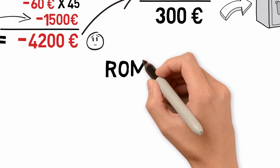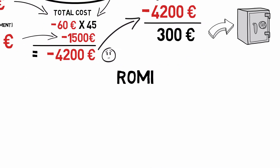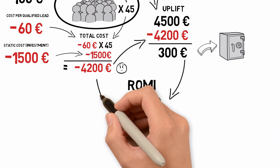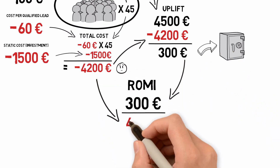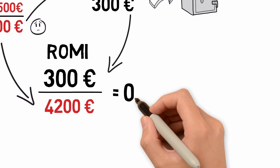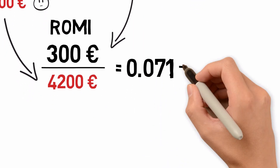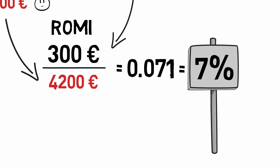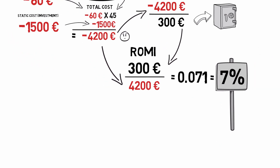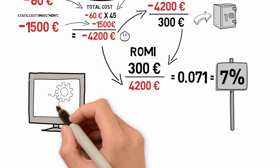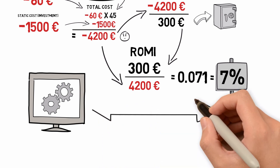But now to the main topic — how do we calculate ROMI? Take the uplift, 300, and divide it with the total cost. In this example, your ROMI is 7%. So perhaps you don't feel like calculating this manually every day for every campaign you have.